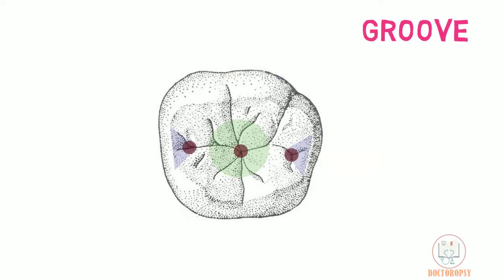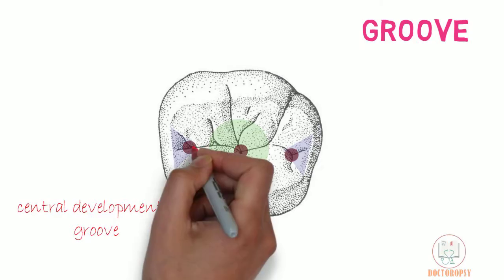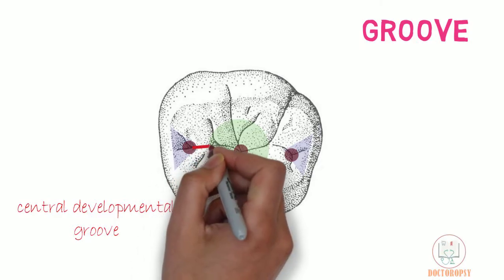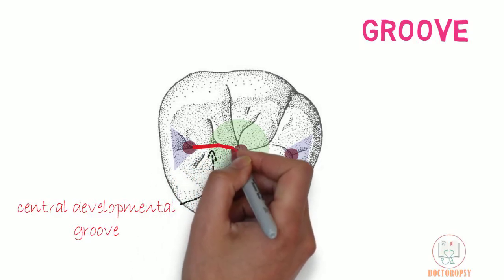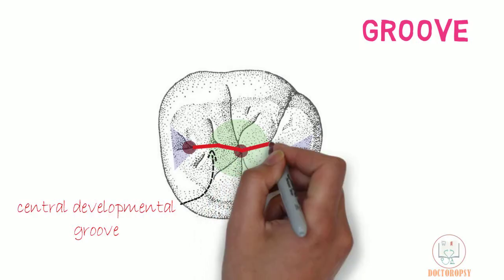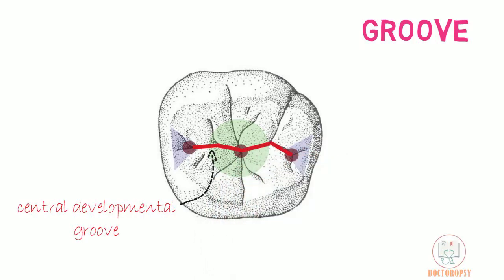There are four developmental grooves. The central developmental groove runs mesiodistally on the occlusal surface. It starts from the mesial pit in the mesial triangular fossa, crosses the central pit, and ends in the distal pit in the distal triangular fossa.